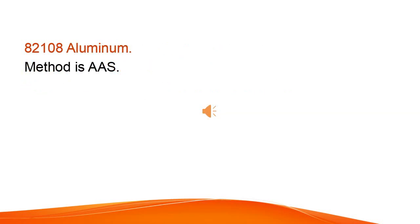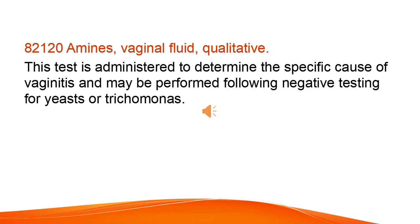Aluminum: method is AAS. Amines, vaginal fluid — qualitative. This test is administered to determine the specific cause of vaginitis and may be performed following negative testing for yeasts or trichomonas.